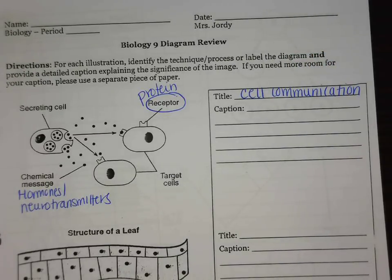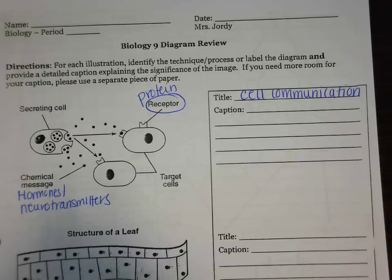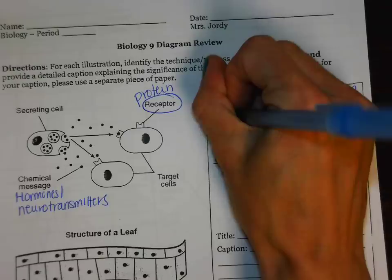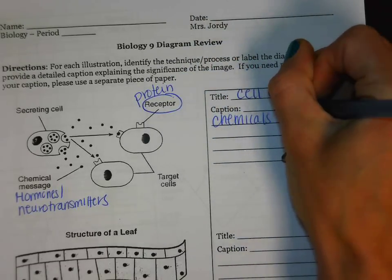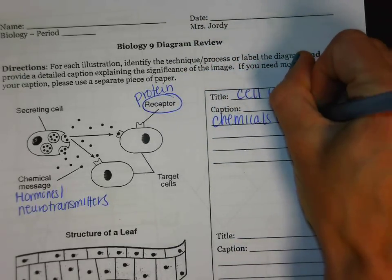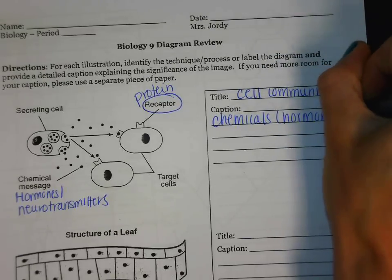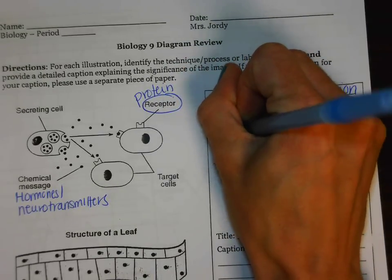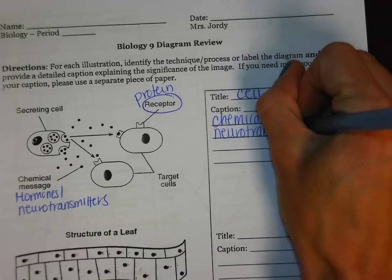For the caption, we want to look at the different terms that are used here and put that in a paragraph to summarize what's going on. Chemicals like hormones and neurotransmitters — neurotransmitters are released by nerve cells — match up with specifically shaped receptors.